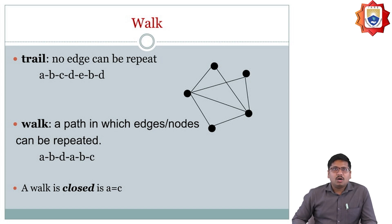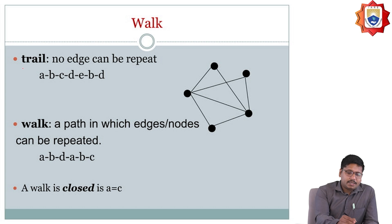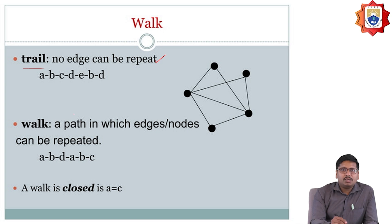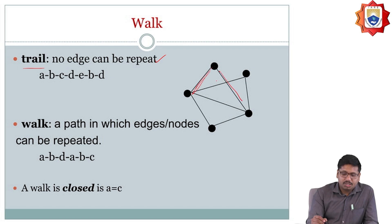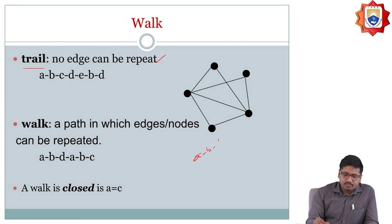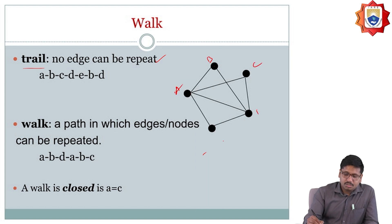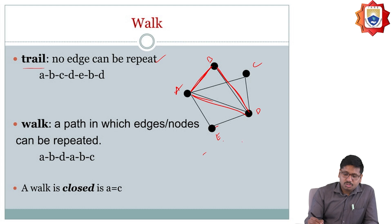Next one is walk. So there should be a trail. Trail is nothing but no edge can be repeated — you visit every edge exactly once. Walk is nothing but where the edges or nodes are going to be repeated. Consider path A, B, C, D, E — what is the path here? A, B, U, D, E — this should be the closed path or closed walk.